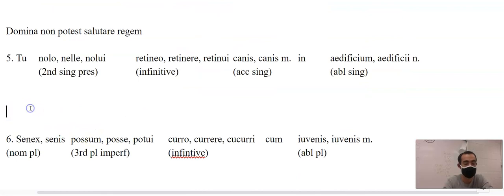Tu is you, that's second singular present tense. This one is a weird one because instead of just nolus it changes to non, so you put non and then the form of volo. Do not want. Retinere, keep the second part. Canem, in aedificio, because it's second declension, I-O.